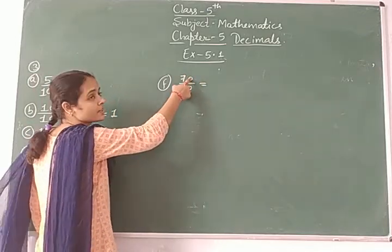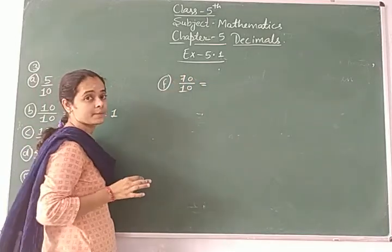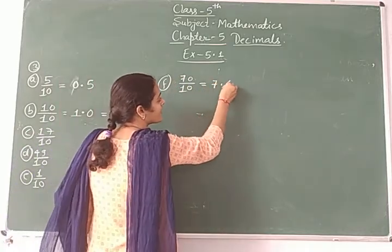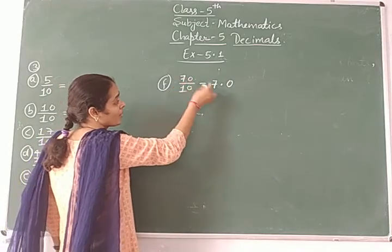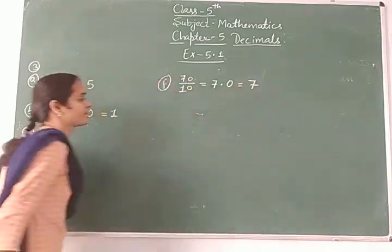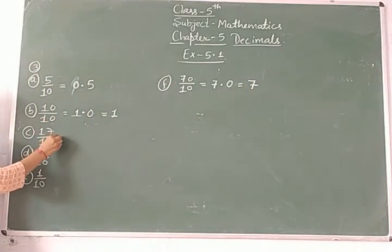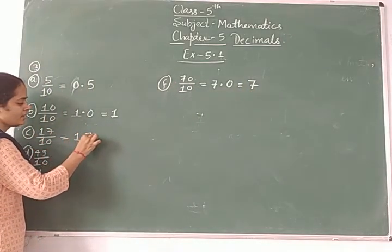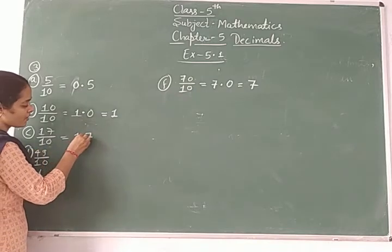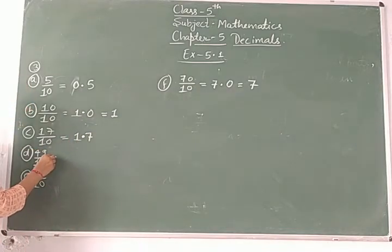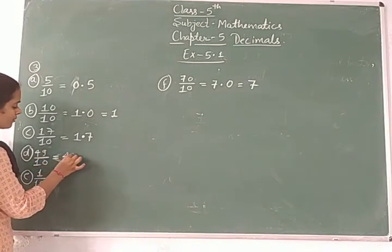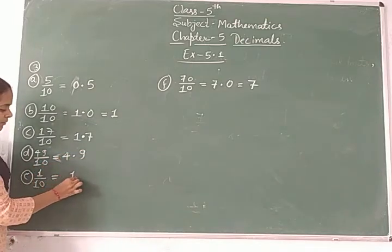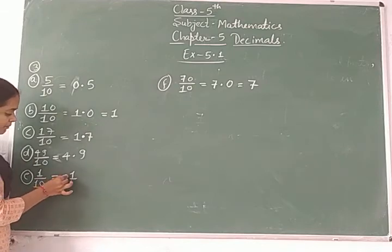For seventy upon ten: count from the right — one place the point, giving 7.0. Similarly, seventy upon ten equals 7.0. For 49 upon ten: place the point one position from the right, giving 4.9. One upon ten means write 0.1 — place here at zero.